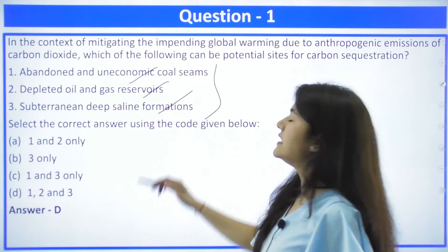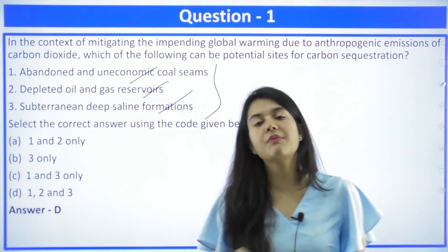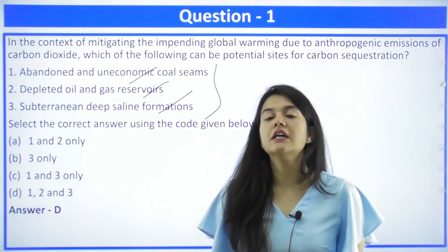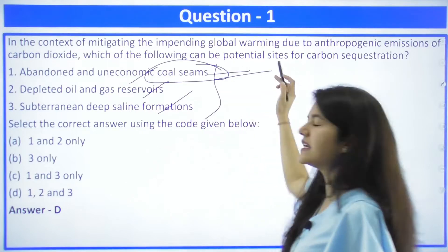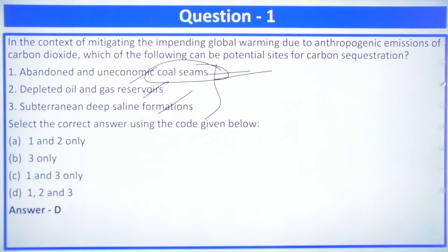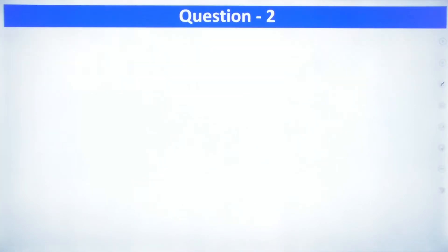All three sites can be used for carbon sequestration — these things are in the news when we read the topic of carbon sequestration. We can sequester carbon in coal seams, in depleted oil and gas reservoirs, and in saline formations. This is geological sequestration — including gas reservoirs, deep seas, and un-mineable coal beds.